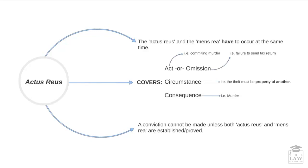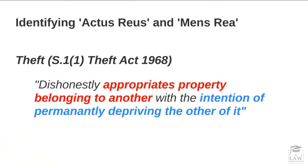The best way to illustrate how the actus reus fits into the definition of the crime itself is to look at the definition of theft as per Section 1, Subsection 1 of the Theft Act 1968. Theft is defined as dishonestly appropriating property belonging to another with the intention of permanently depriving the other of it. The appropriation of property belonging to another is the actus reus, the physical act itself, whereas the intention of permanently depriving the other of it is the mens rea.